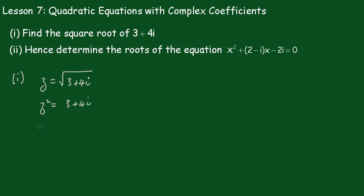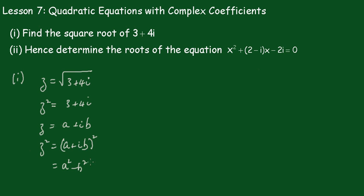Now I'm going to let z equal a plus ib. So z squared will be equal to (a plus ib) all squared. Squaring that out, we get a squared minus b squared plus 2abi.